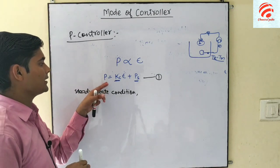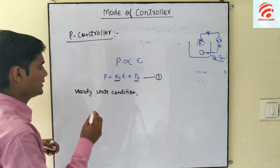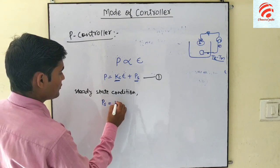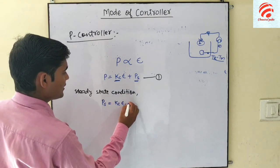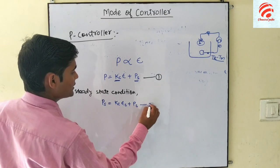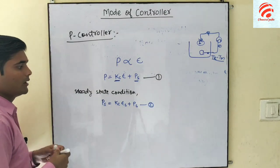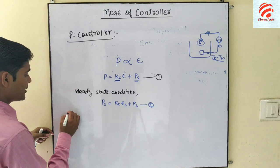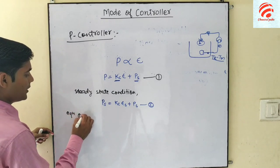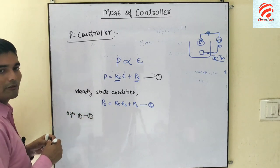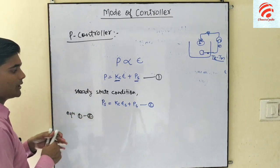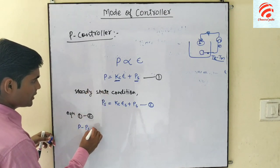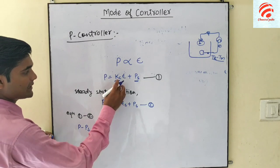The equation is: output is going to be equal to Kc times epsilon sub s, plus P sub s. That is equation 2. Now, P minus P sub s is equal to Kc.